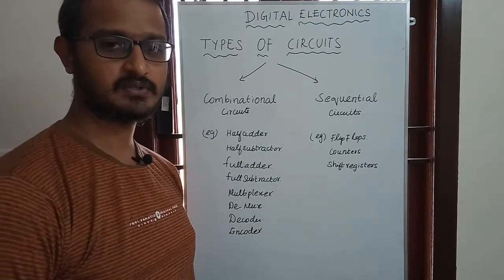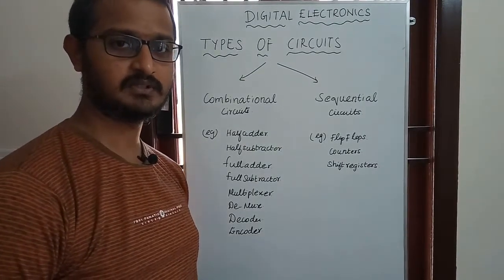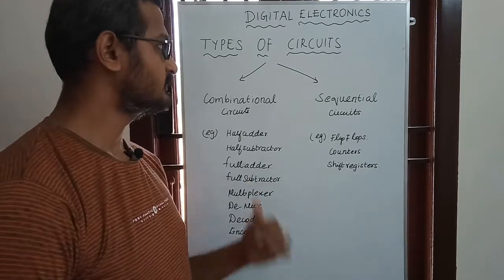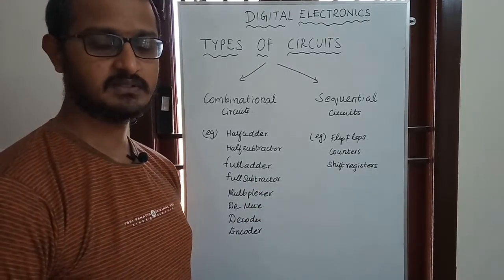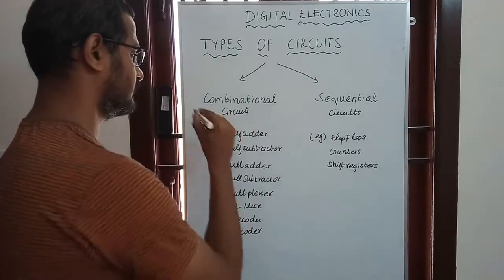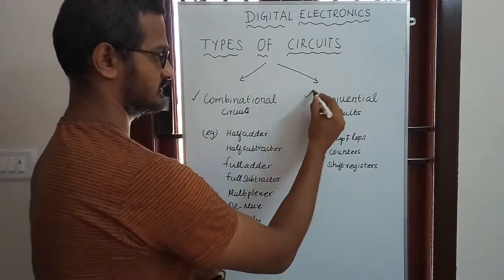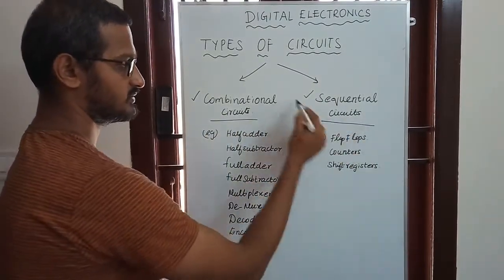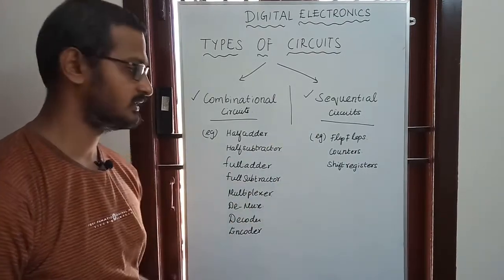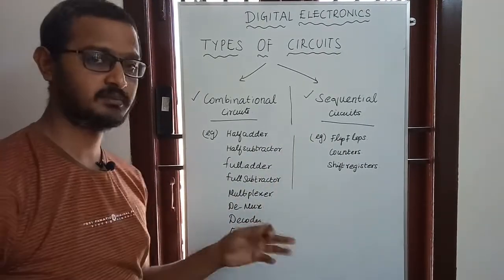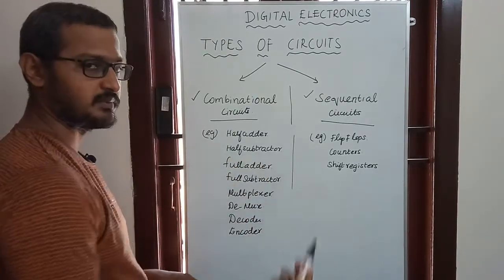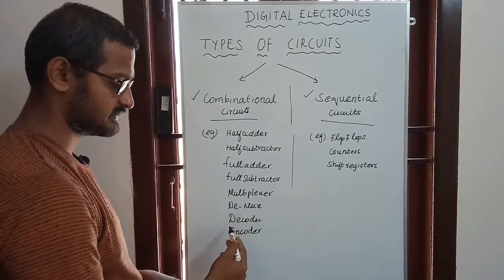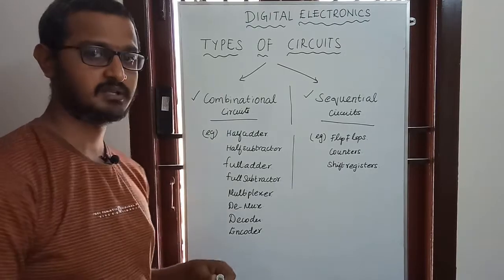Hi friends. In previous videos we talked about how circuits and gates are built. In digital electronics, we talked about two types of circuits: combinational circuits and sequential circuits. We discussed the difference in detail and looked at examples of both. For combinational circuits, examples include half adder, half subtractor, full adder, full subtractor, multiplexer, demultiplexer, decoder, and encoder.